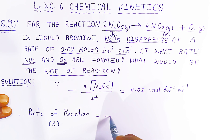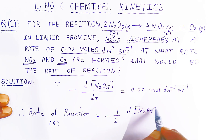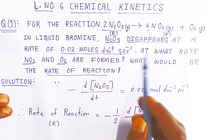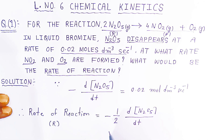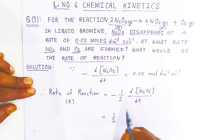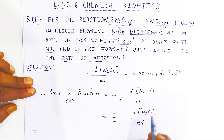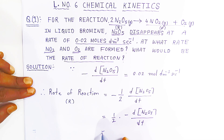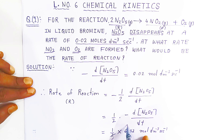Applying the rate of reaction at the reactant side: rate of reaction = −(1/2) × d[N₂O₅]/dt. Substituting the given value: rate = (1/2) × 0.02 mol/dm³/s = 0.01 mol/dm³/s. So the rate of reaction is 0.01 mol per dm³ per second.